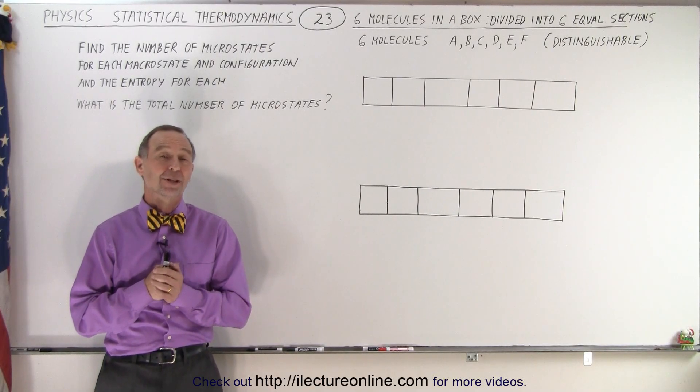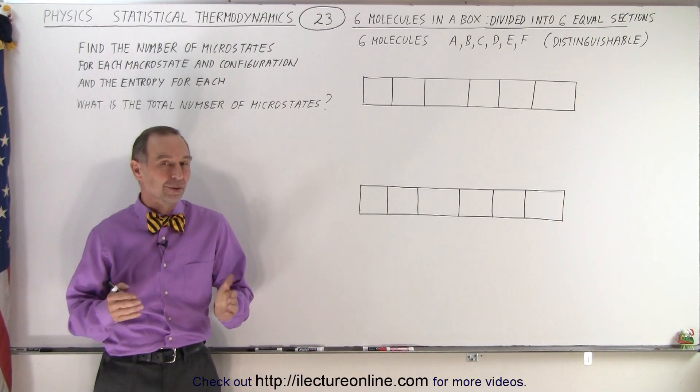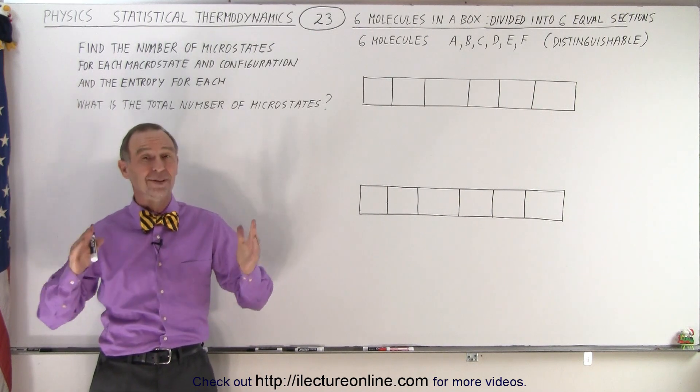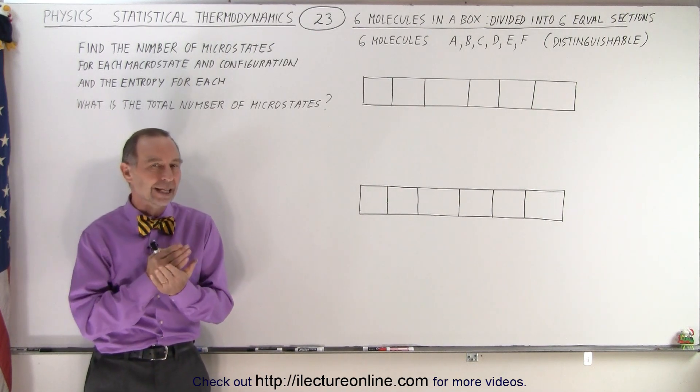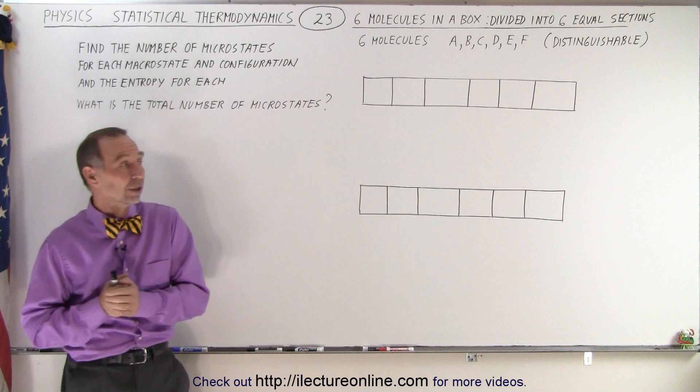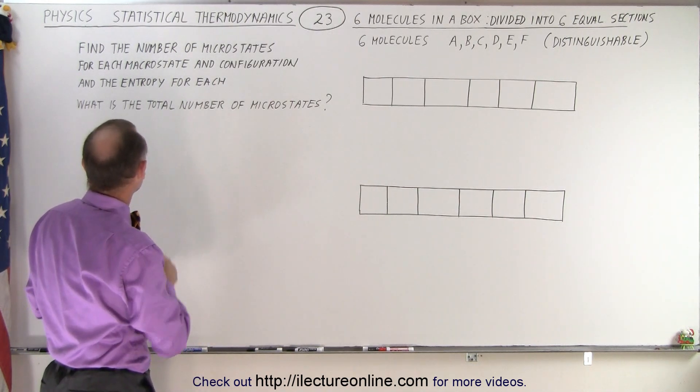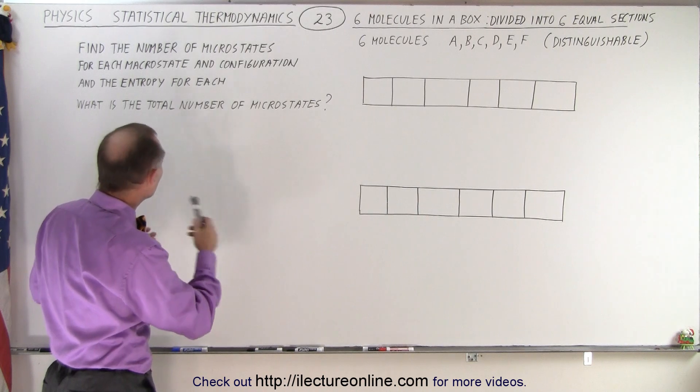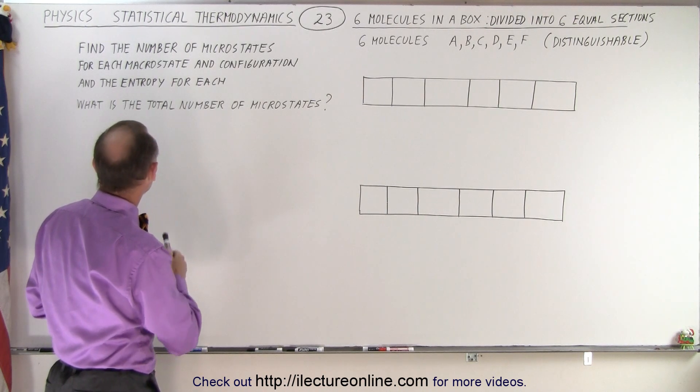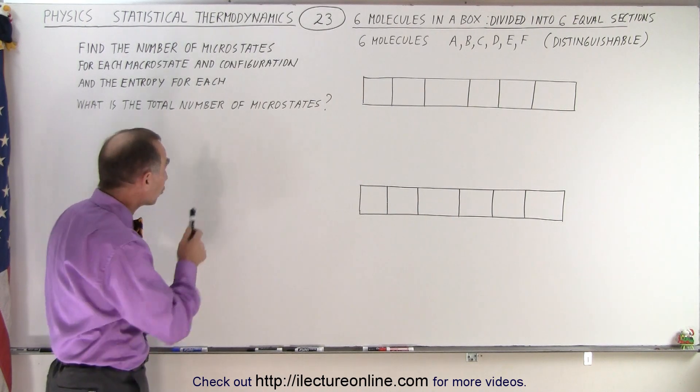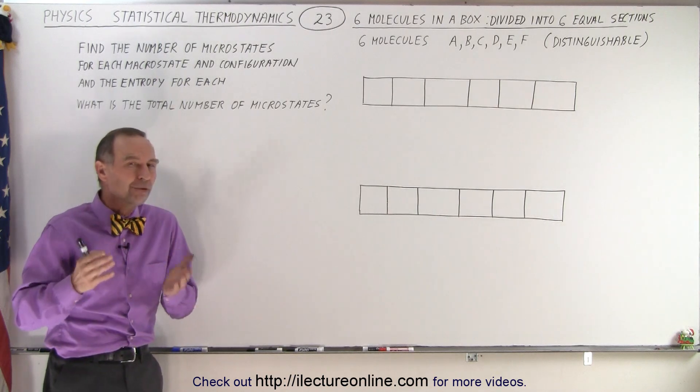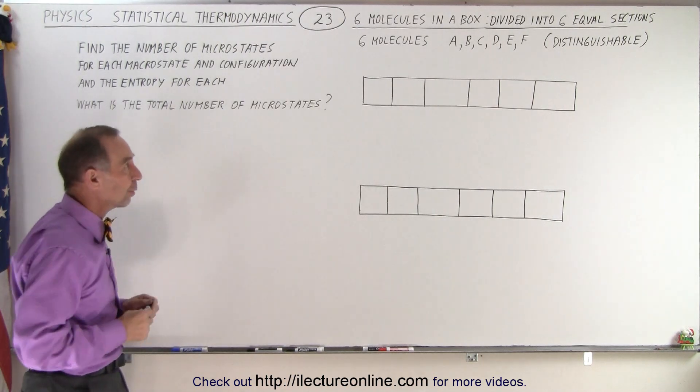Welcome to ElectronLine. So now let's try this example. Six molecules in the same size box, but now the box is divided into six equal parts. And what we're trying to do here is we're trying to find the number of microstates for each configuration and the enthalpy for each, and as well what is the total number of microstates you can have in a situation like this.